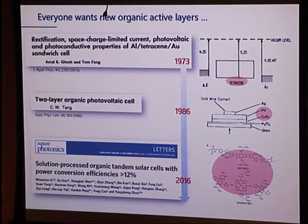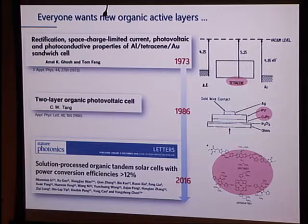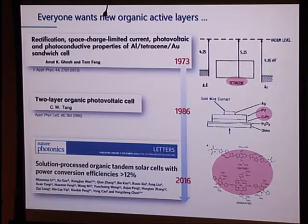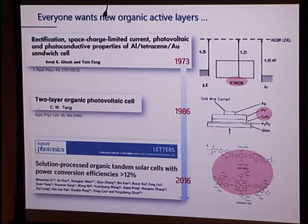Many people have worked on making more and more complex materials. Here is something quite complex where someone spent significant synthetic effort, and now we're talking in excess of 12% efficiency. That's still only roughly half of a silicon solar cell, but remember this has other advantages. And with silicon we sort of know where we're topping out, whereas here there are certainly future advances possible. By and large, though, this work has focused on the organic active matrix.